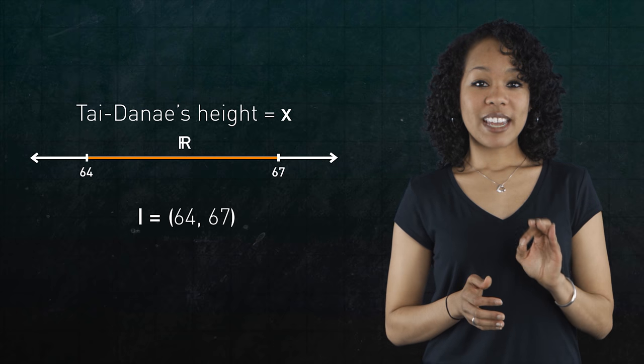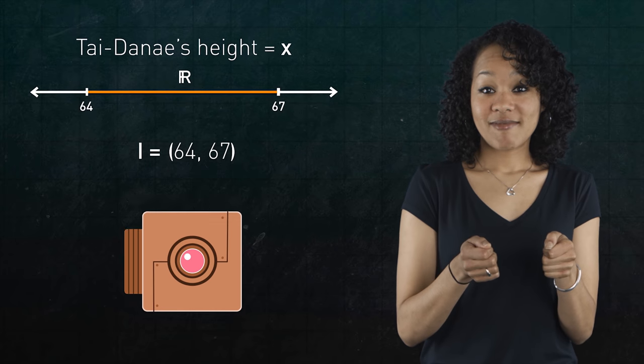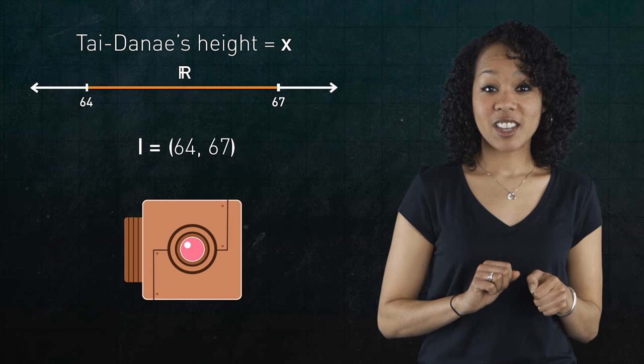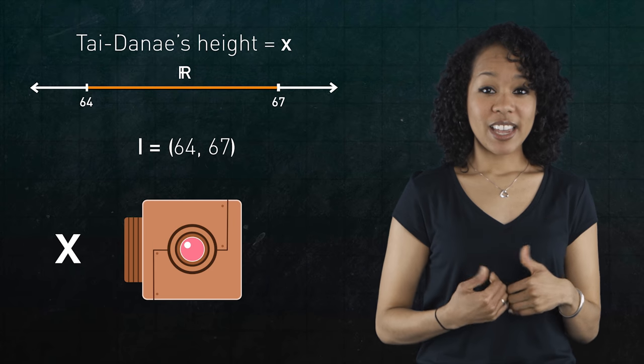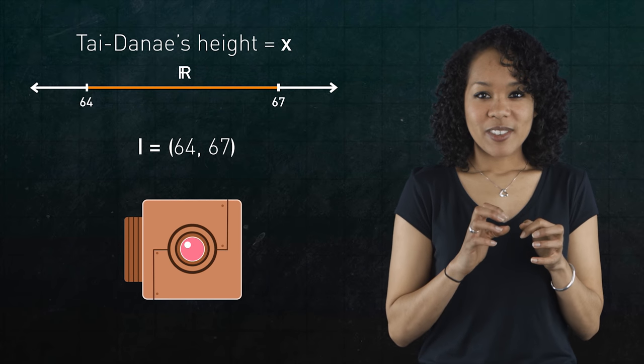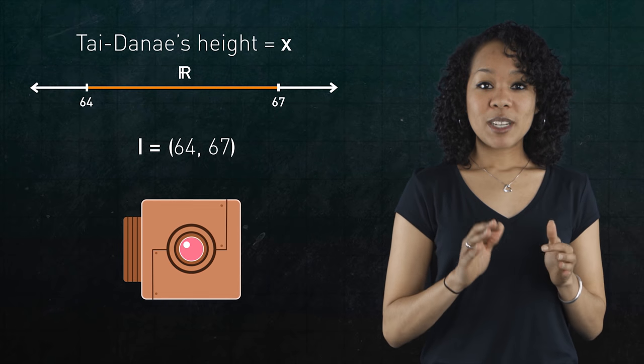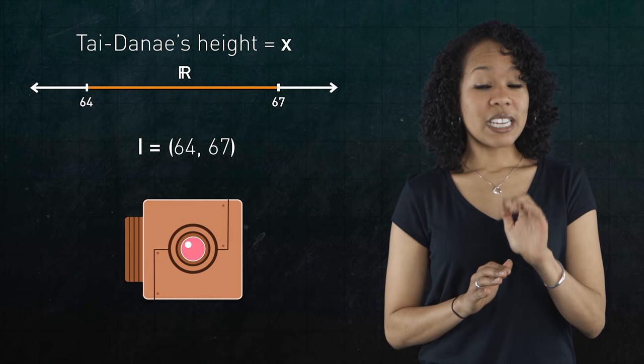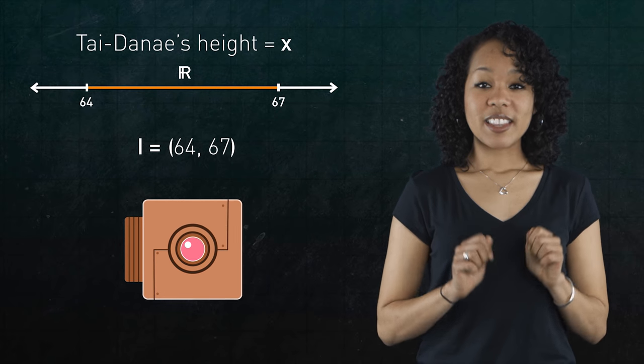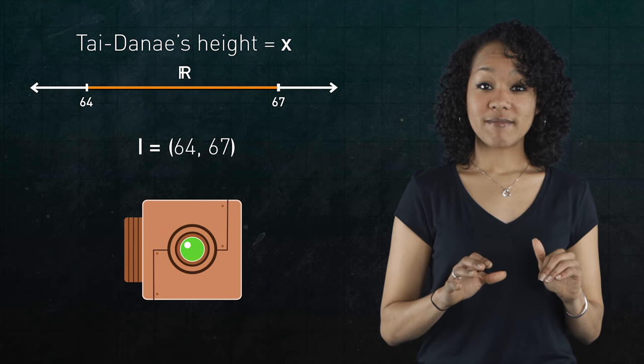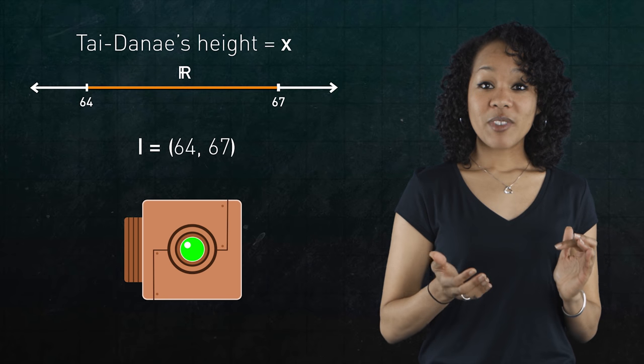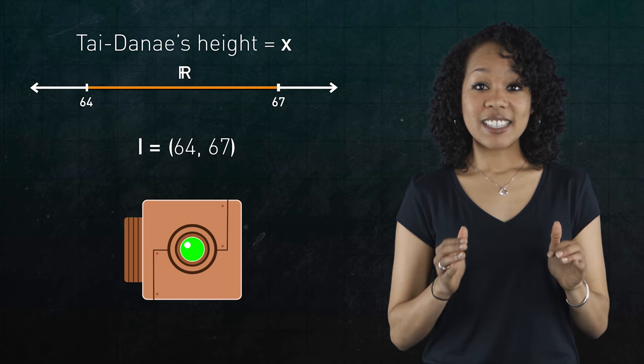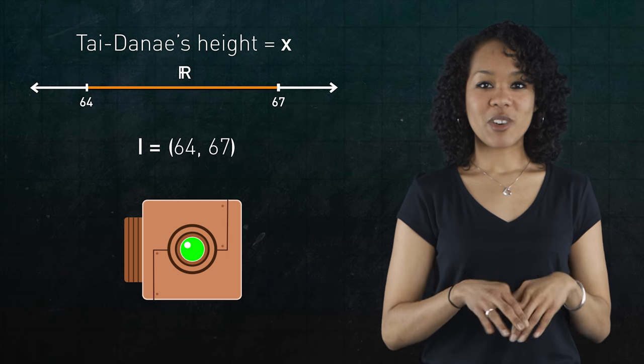To help you determine the answer, I'm going to give you a machine. Here's how the machine works. You can feed any number into it, like my height, and the machine will analyze that number. If the number is in between, but not equal to, 64 and 67, then the machine will eventually terminate. That's the machine's way of verifying, yes, Tai Diné is somewhere in between 5'4 and 5'7.